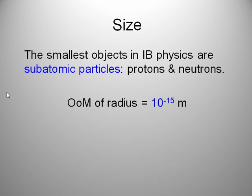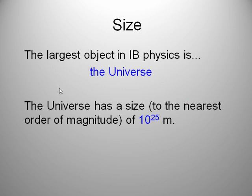If we're talking about size, what are some of the smallest objects in IB physics? They're subatomic particles, for example, protons and neutrons. The order of magnitude of the radius of a proton is 10 to the minus 15th meters. The largest object we're ever going to talk about is the universe. The universe has got a size of about 10 to the 25th meters.